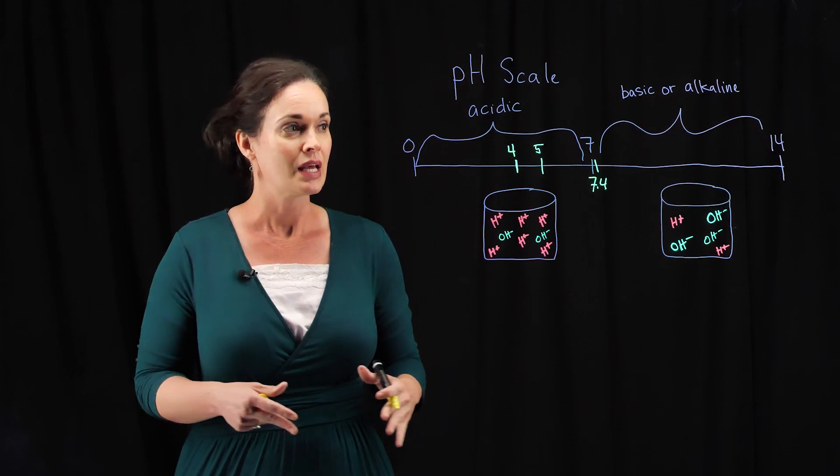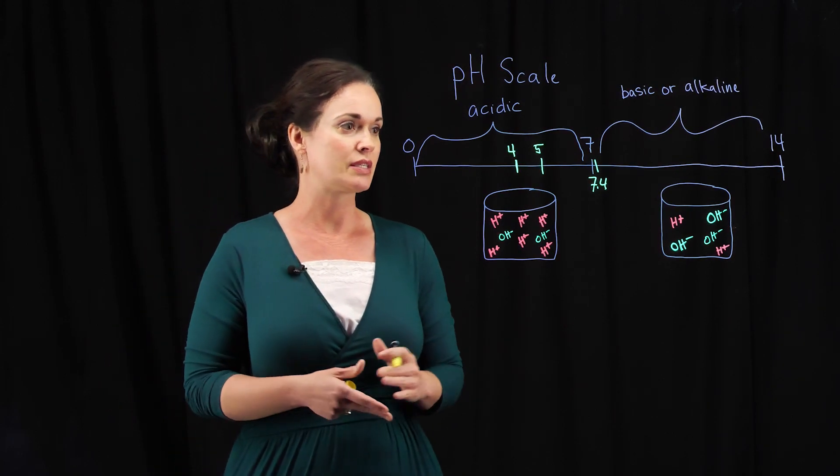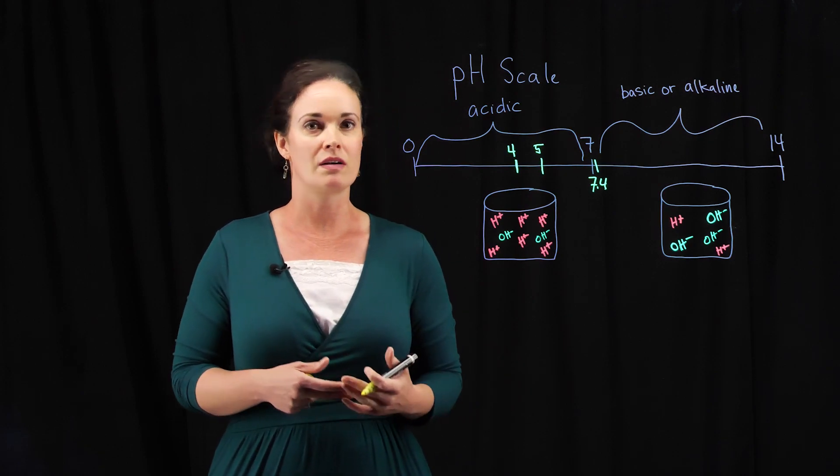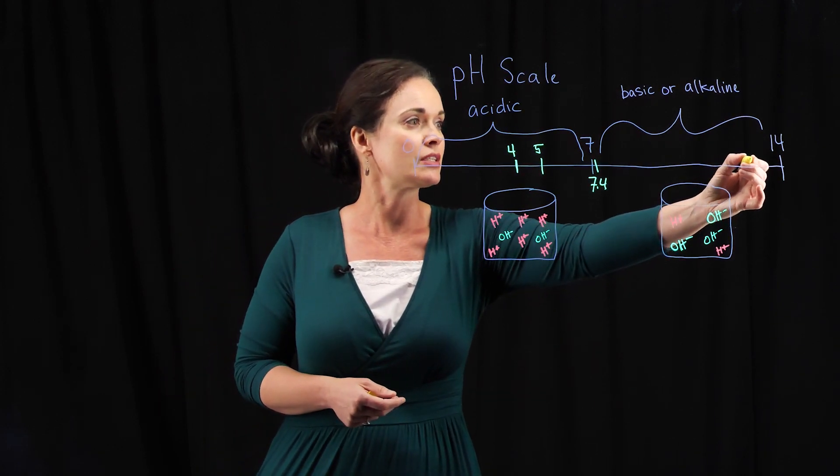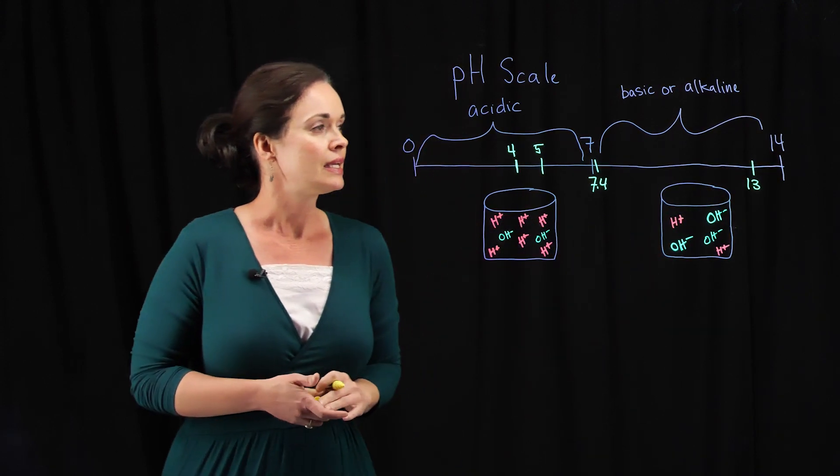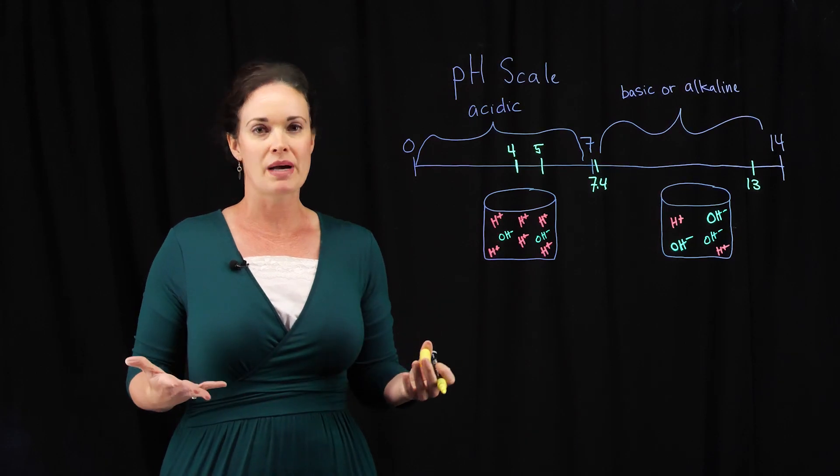The only substance I can think of that is straight neutral is distilled water, which has a pH of 7.0. Just to give you another example of an alkaline substance: bleach. That household cleaner is really alkaline; its pH tends to be about 13.